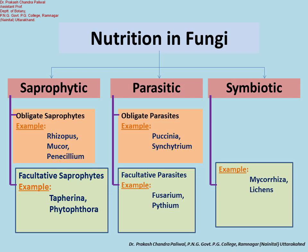Enzymes that are secreted outside the cell are known as extracellular enzymes or exoenzymes — for example, amylase and cellulase. Those that are produced and act within the fungal cell are known as intracellular enzymes or endoenzymes.